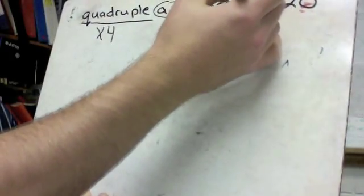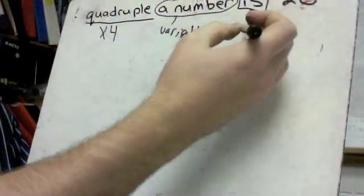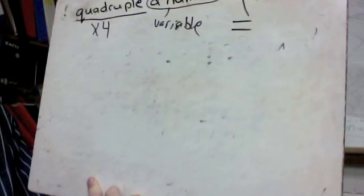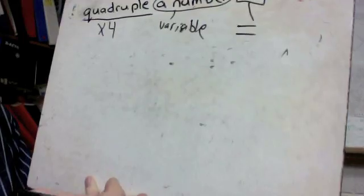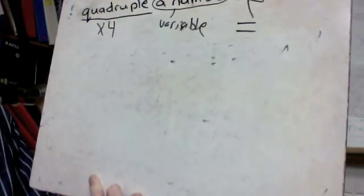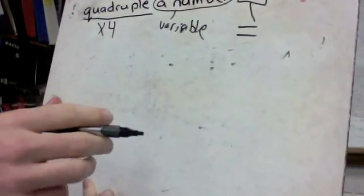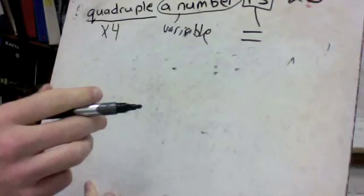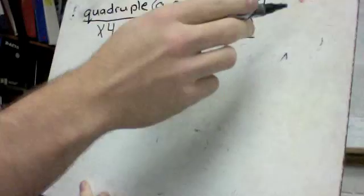If you ever see the word is, this is always an indication of an equal sign and then is 20. So all we have to do is follow the steps to put this together so quadruple a number is 20. So this is basically saying four times a number equals 20.